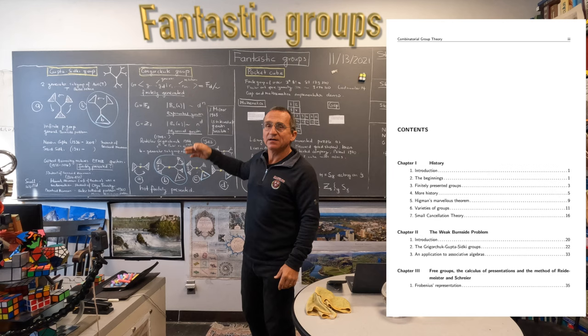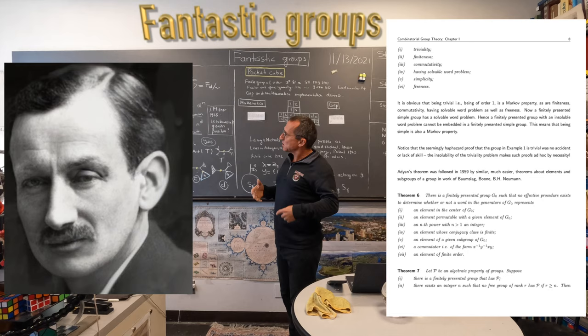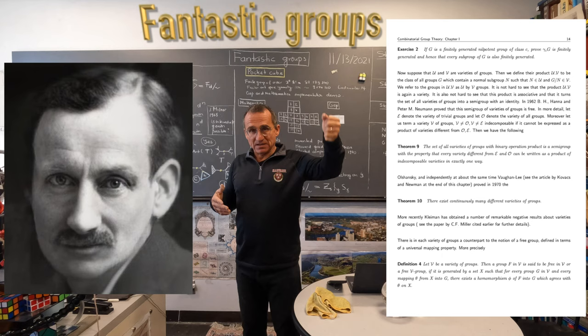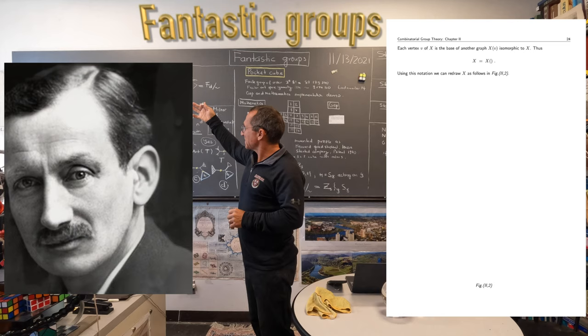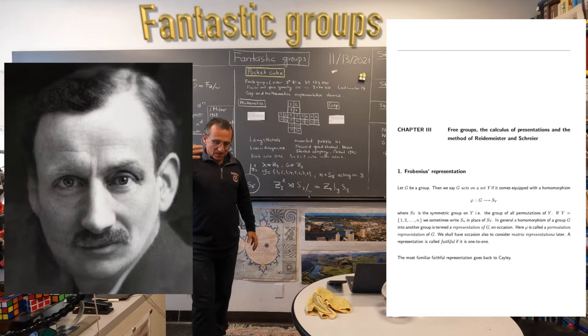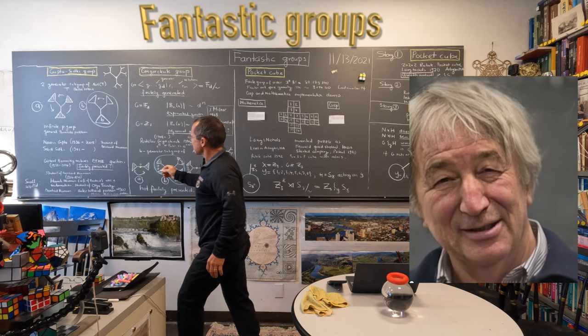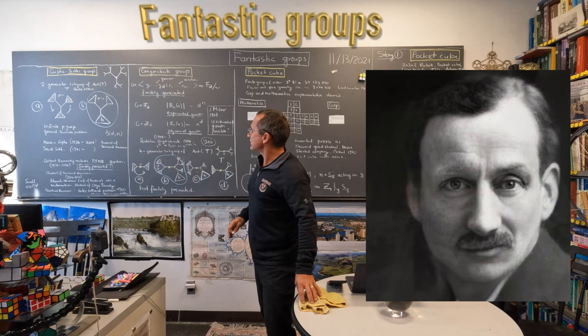You can show — as in Baumslag's lectures — that it's an infinite group. It's a P-group, meaning every element has order a power of P. That's quite interesting as an answer to the Burnside problem. Burnside asked whether a quotient of the free group where every element has order P — called the Burnside group — is necessarily finite.